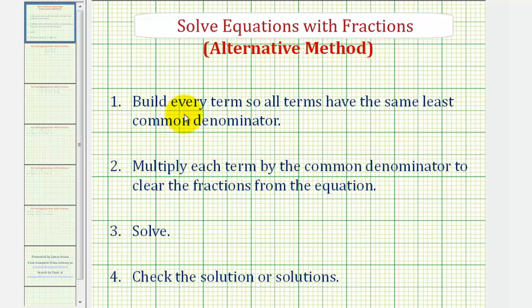So for this method, we're first going to build each term so all the terms have the same least common denominator, then we're going to multiply each term by the common denominator to clear the fractions from the equation, solve, and then check our solution or solutions.